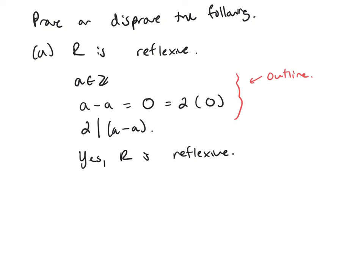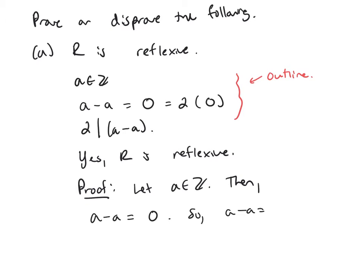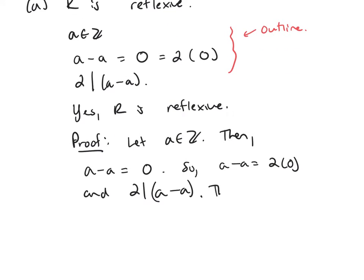Let's write the proof now. Let A be any integer in Z. Then A minus A equals zero, so A minus A equals two times zero, and two divides A minus A. Therefore A is related to A. Every element is related to itself, thus R is reflexive.